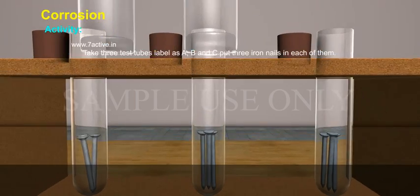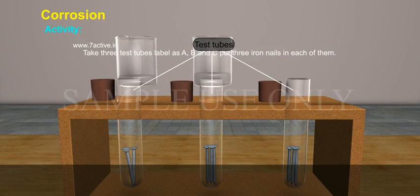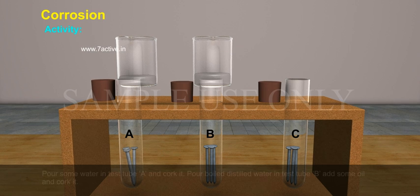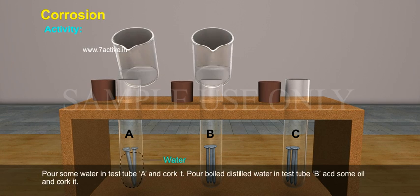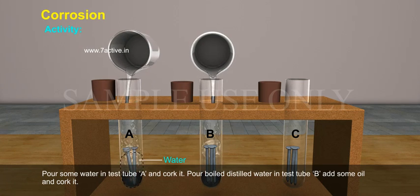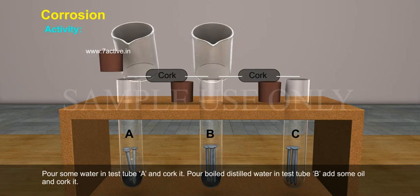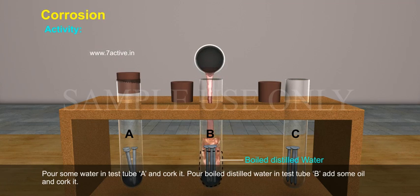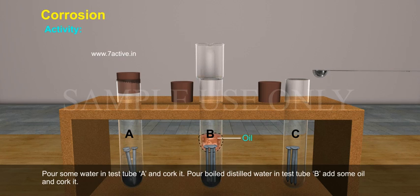Activity: Take three test tubes labeled as A, B, and C. Put three iron nails in each of them. Pour some water in test tube A and cork it. Pour boiled distilled water in test tube B, add some oil and cork it.